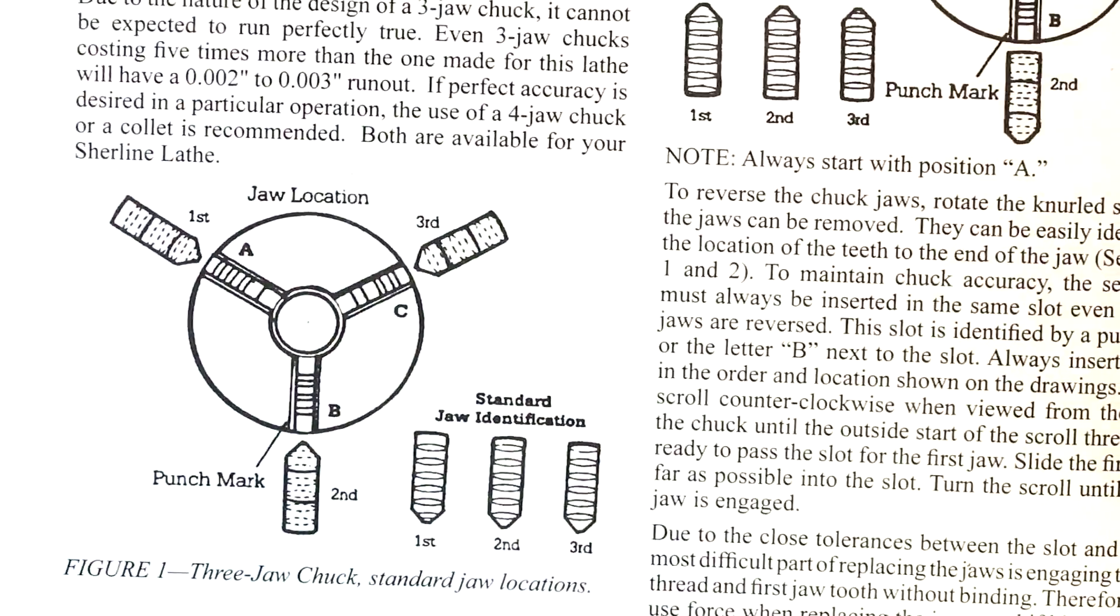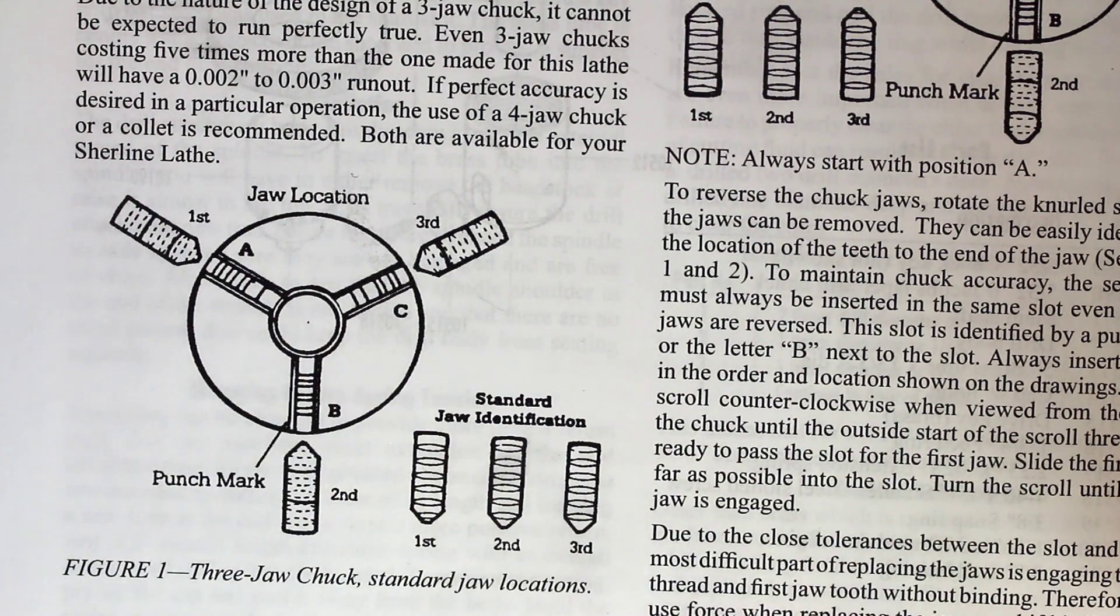This disassembly and reassembly, as you can see, doesn't take very long at all on a small chuck like this. And it's useful if you really want to clean it out. If you're getting a lot of metal filings or things like that inside the chuck, the best way is to disassemble the jaws and to clean out the scroll as much as you can and then reassemble it.